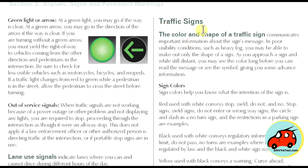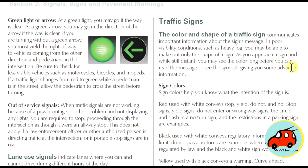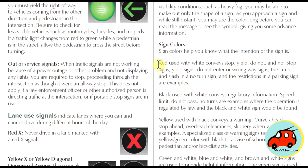The color and shape of traffic signs communicates the most important information — the sign's message. In poor visibility conditions such as heavy fog, you may be able to make out only the shape of a sign. As you approach a sign while still in the distance, you may see the color long before you can read the message or symbol, giving you advanced information. Let's go over some sign colors.